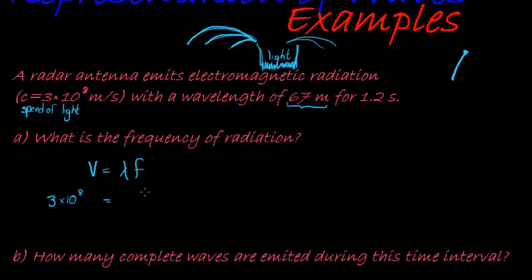The wavelength is 67 meters. And it is being done for 1.2 seconds. Now, 1.2 seconds don't feature here, because they ask us, what is the frequency of the radiation? We don't need the 1.2 seconds. Frequency is calculated in this formula. 3 times 10 to the power of 8 divided by 67. What do we get?